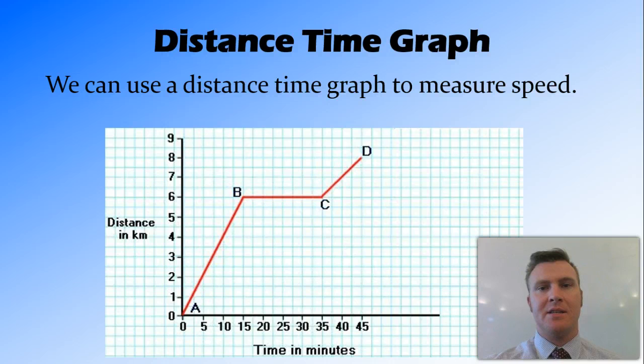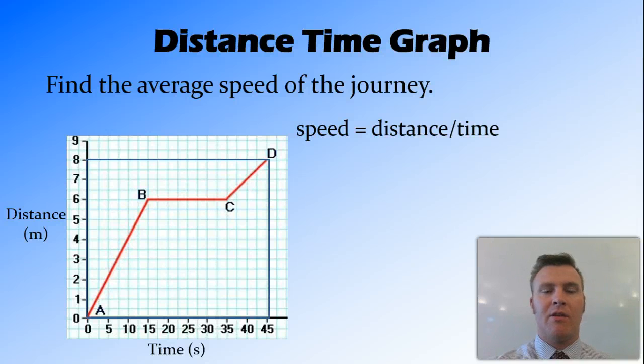We can then, from our distance time graph, use the information to calculate speed. So if I wanted to find the average speed for this journey, we know that speed equals distance divided by time.